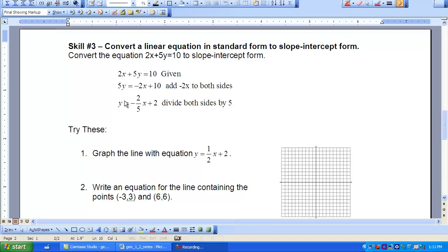Then I'm going to need to divide both sides by 5 to get the Y all by itself. So when I do that, I get negative 2 divided by 5X plus a 10 divided by 5. So that would give me 2. So remember, when you divide both sides by 5, you've got to divide everything over here by 5. So that leaves me with Y equals a negative 2 fifths X plus 2.